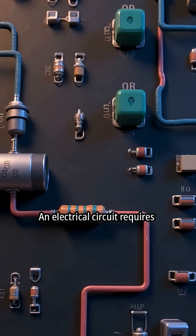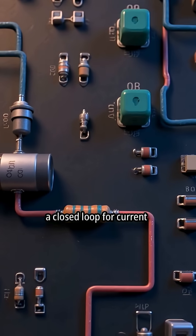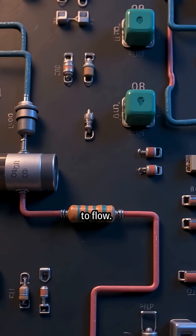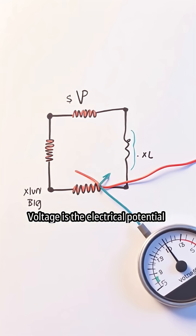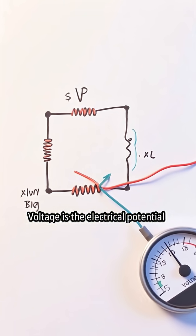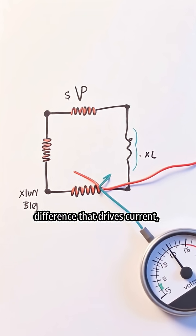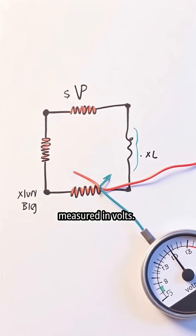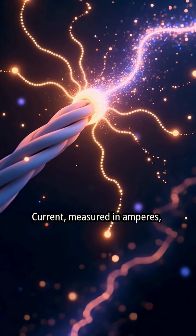An electrical circuit requires a closed loop for current to flow. Voltage is the electrical potential difference that drives current, measured in volts.